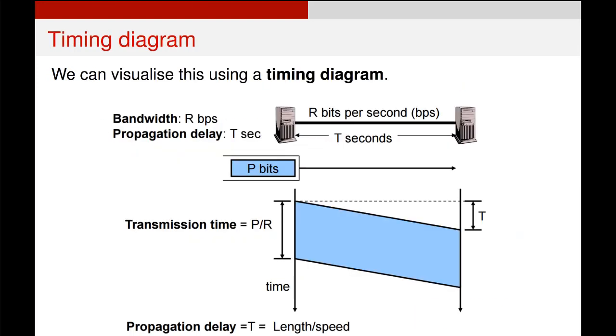We can visualize it using a timing diagram, which looks a little bit like this. So if we send a bit of information, what we can see is that the transmission time is just the ratio of the propagation delay to the bandwidth. So the bandwidth again is just how many bits per second we can send down a connection. And the propagation delay is how long it takes us to send a bit of information down that same connection.